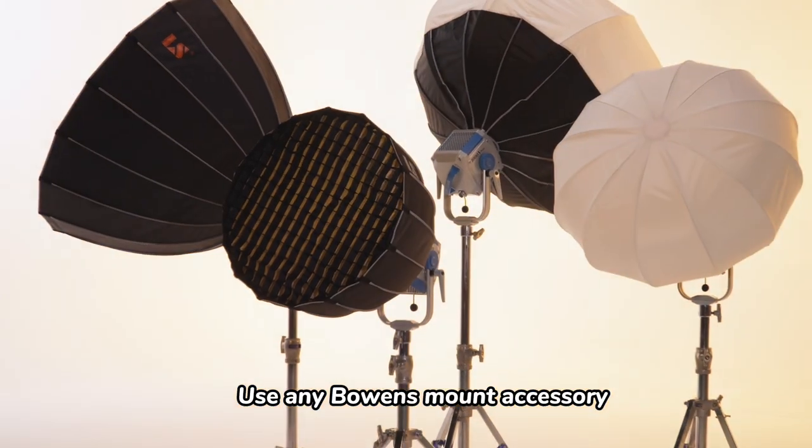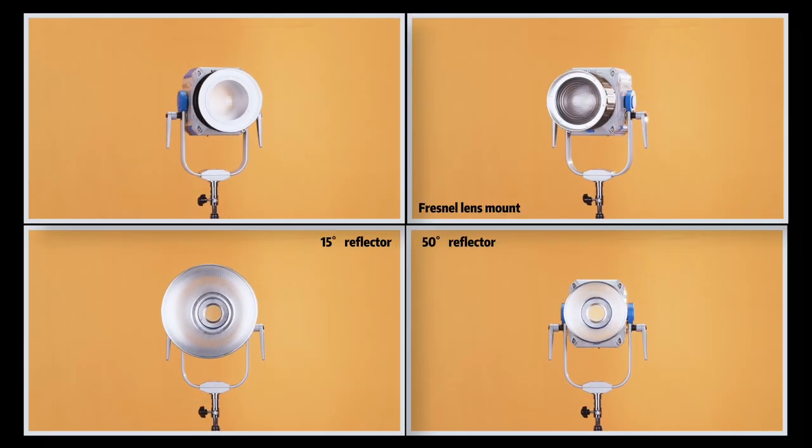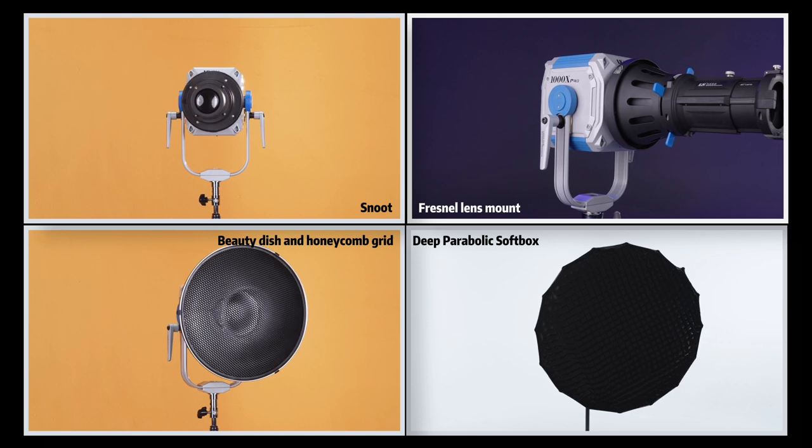And with the Bowens mount, you can use any Bowens mount light modifier, such as a softbox, a Chinese lantern, or even a gobo modifier like we're doing here.